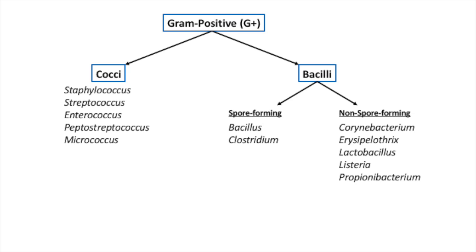Under the bacilli we have spore-forming and non-spore-forming. Under the spore-forming we have Bacillus and Clostridium. Under the non-spore-forming we have Corynebacterium, Erysipelothrix, Lactobacillus, Listeria, and Propionibacterium.